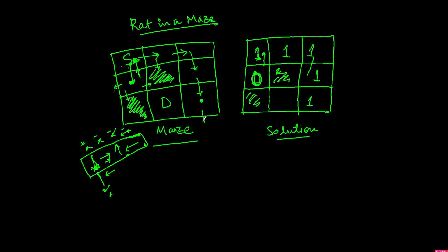The rat goes down, marks the cell as one, then goes down again, marking that cell as one. From here it tries to go down — that's blocked. It cannot go right either as that breaks the boundary. Going up leads back to a cell already marked one, meaning the rat came from there. The only remaining move is left, so the rat moves left and reaches the destination. This is the path — all ones — for the rat to take from source to destination.